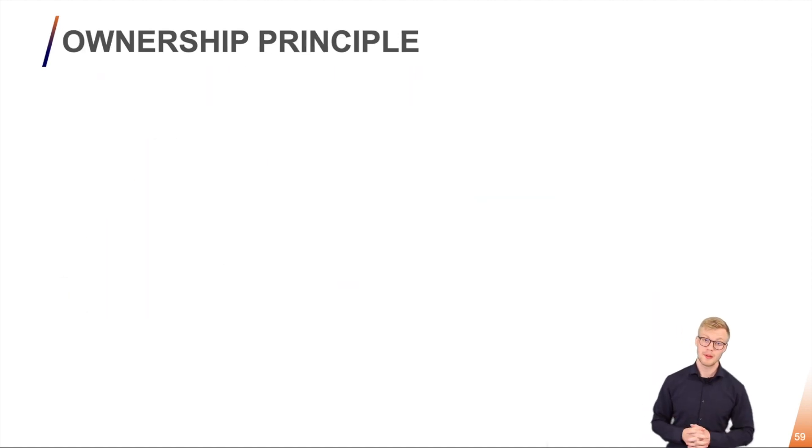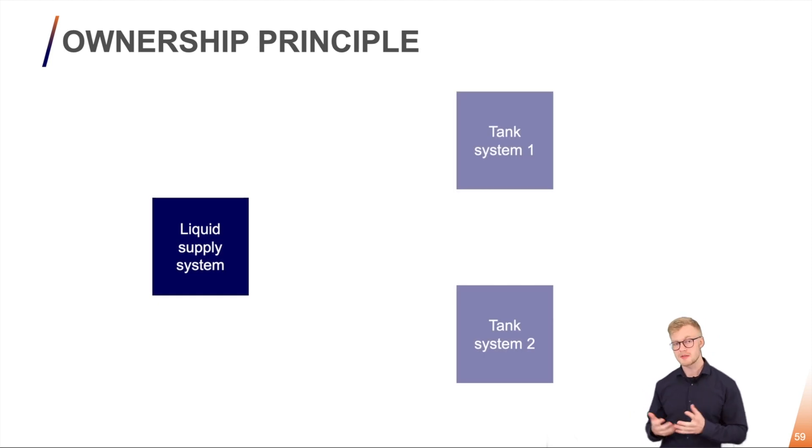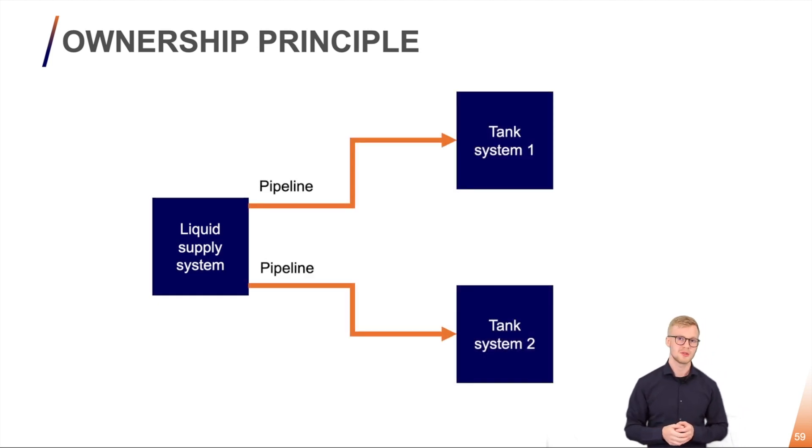Another problem that we encounter a lot is the ownership principle. For example if we have a system here which consists of a supplying system, some receiving systems and a transfer system in between them.